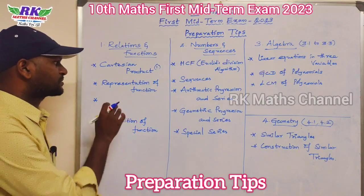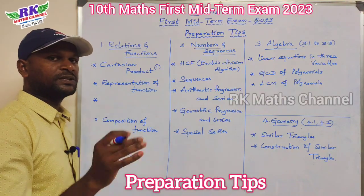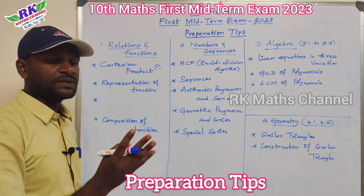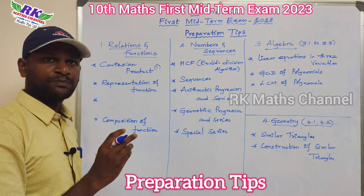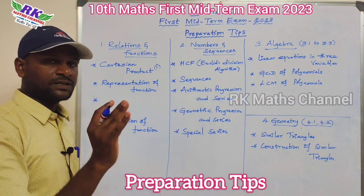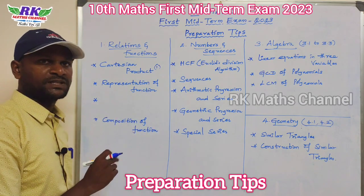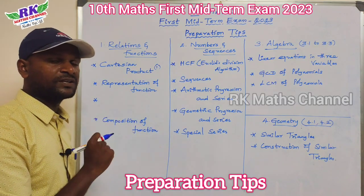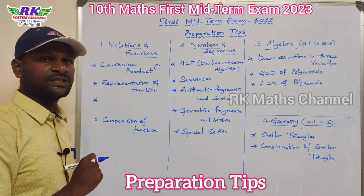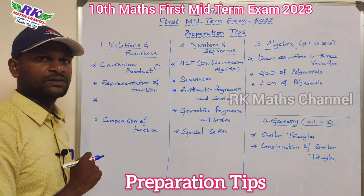Now for the five-mark section: the representation of functions. This topic is very easy — one of the functions of 4. Representation includes: set of ordered pairs, tables, diagram, and graph. That is based on problems. Example 1.11 and exercise 1.4 problem numbers 2 and 3 — problem number 2 is a 5-mark question.